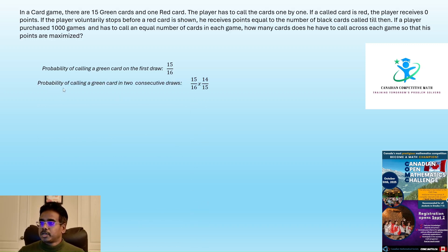The probability of calling a green card in two consecutive draws, meaning he pulled a green card in the first draw, he pulled a green card in the second draw, that will be 15 by 16, which is probability of calling a green card in the second draw.